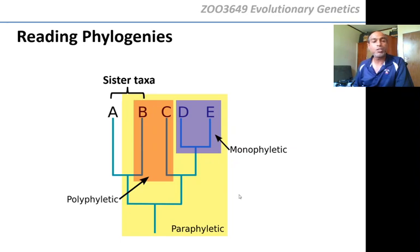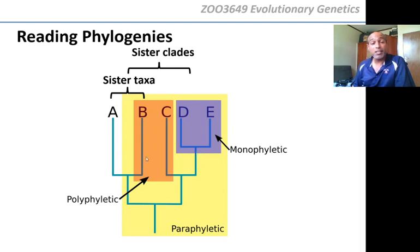So they cannot have a monophyletic clade — they have a paraphyletic clade, because one other species belongs to their clade. Anything that is most closely related — monophyletic — are called sister taxa. A and B are sister taxa; C and D are sister taxa. And then these two clades — clade A, B and clade C, D, E — are obviously also sister clades.